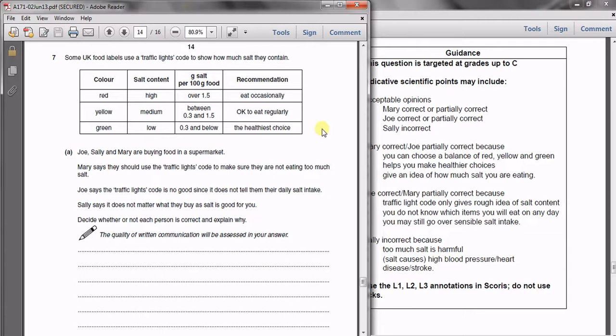Joe says the traffic light code is no good since it does not tell them their daily salt intake. And the third says Sally says it does not matter what they buy as salt is good for you. So your task is to decide whether each person is correct and explain why.